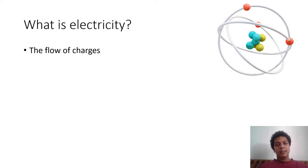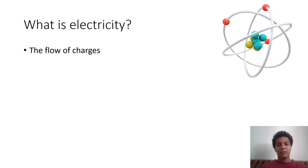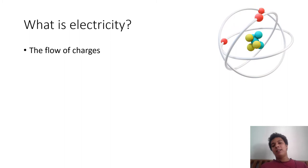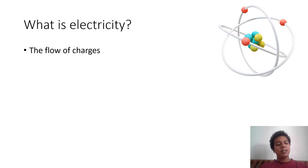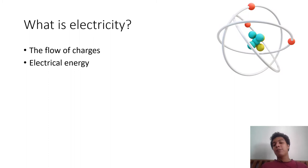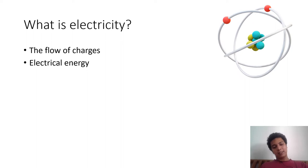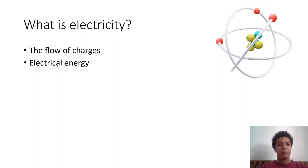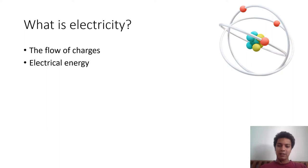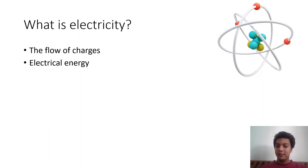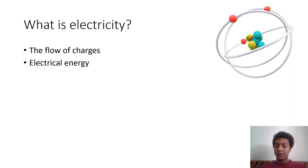Electricity means the flow of charges. Basically it comes from atomic origin — you have electrons moving around the nucleus of an atom. In a metal you have free electrons, and when you apply a potential they start moving — that is what we mean by electricity. We also use the same word for electrical energy. One is in terms of current; the other is in terms of electrical energy that we get and convert into different forms.